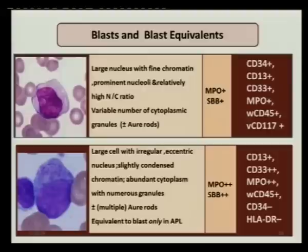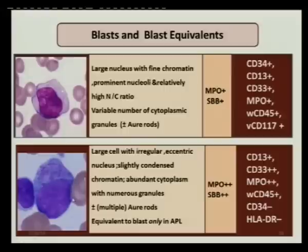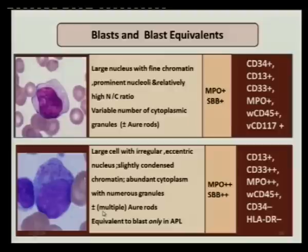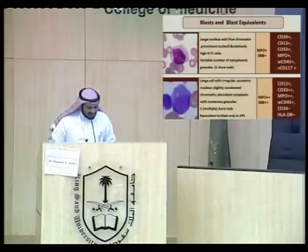The first blast equivalent is the pro-myelocyte, which should be counted as blast equivalent only in APL cases. It is a large cell with irregular eccentric nucleus, slightly condensed chromatin, abundant cytoplasm with numerous granules, and plus or minus multiple Auer rods — faggot cells. It shows the strongest MPO positivity by flow and cytochemistry, and characteristically is negative for CD34 and HLA-DR, and bright positive for CD33.